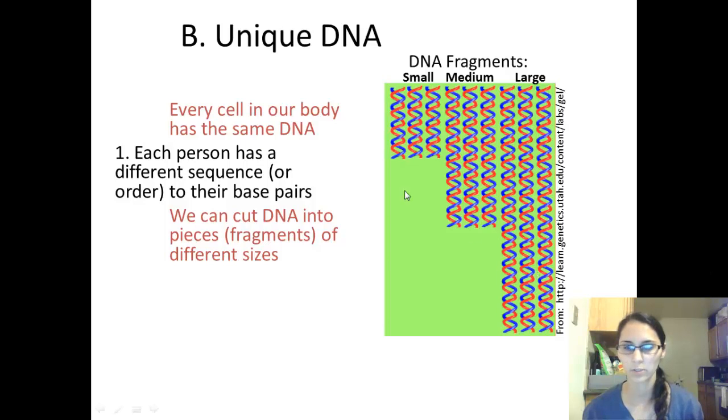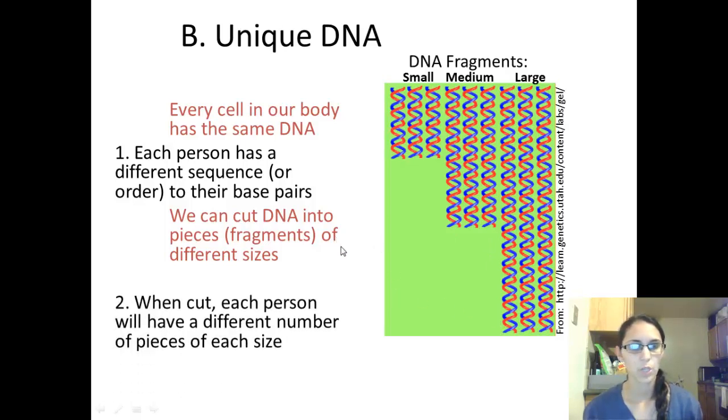So in this image there are three smaller fragments of DNA, three medium, and three large fragments of DNA. So when we cut DNA, a DNA sample, each person will have a different number of pieces of each size.